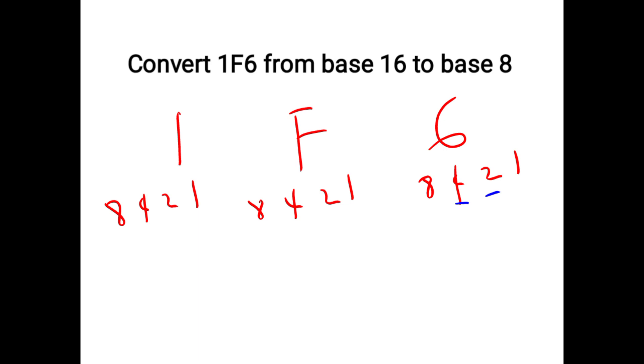For example, 6 here is 4 plus 2, that makes 1, 0, 1, 1, 0. F means 15, so 15 is 8 plus 4 plus 2 plus 1, so that's 1, 1, 1, 1. For 1, the rest are definitely 0. So converting to base 2 is 111110110.